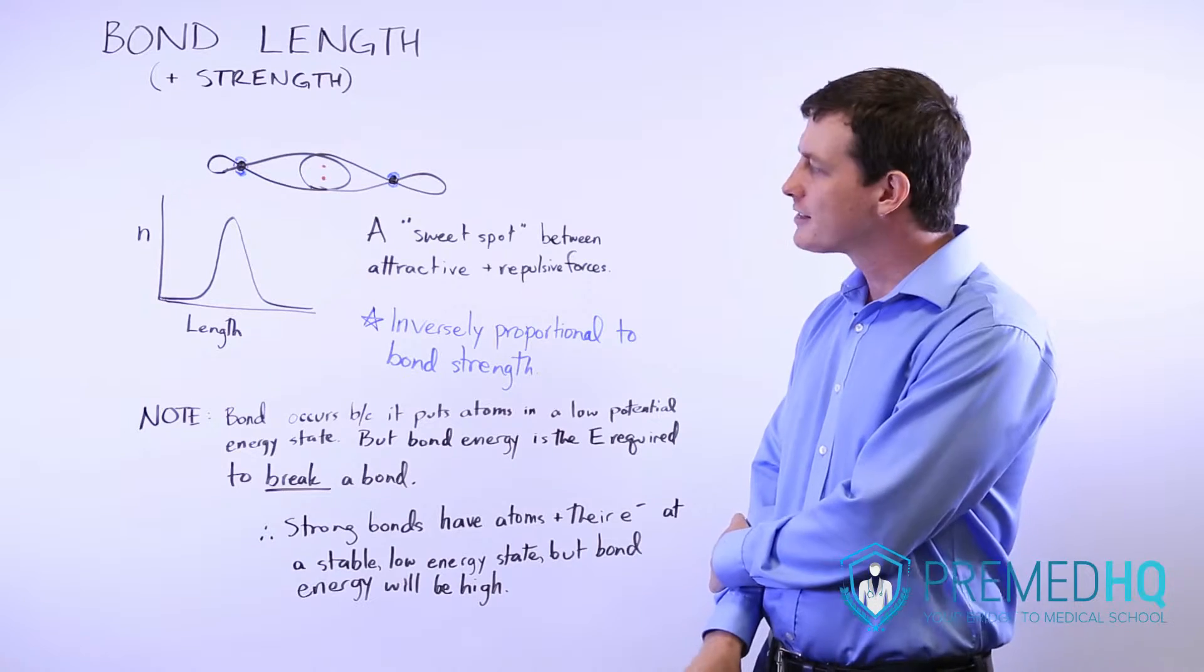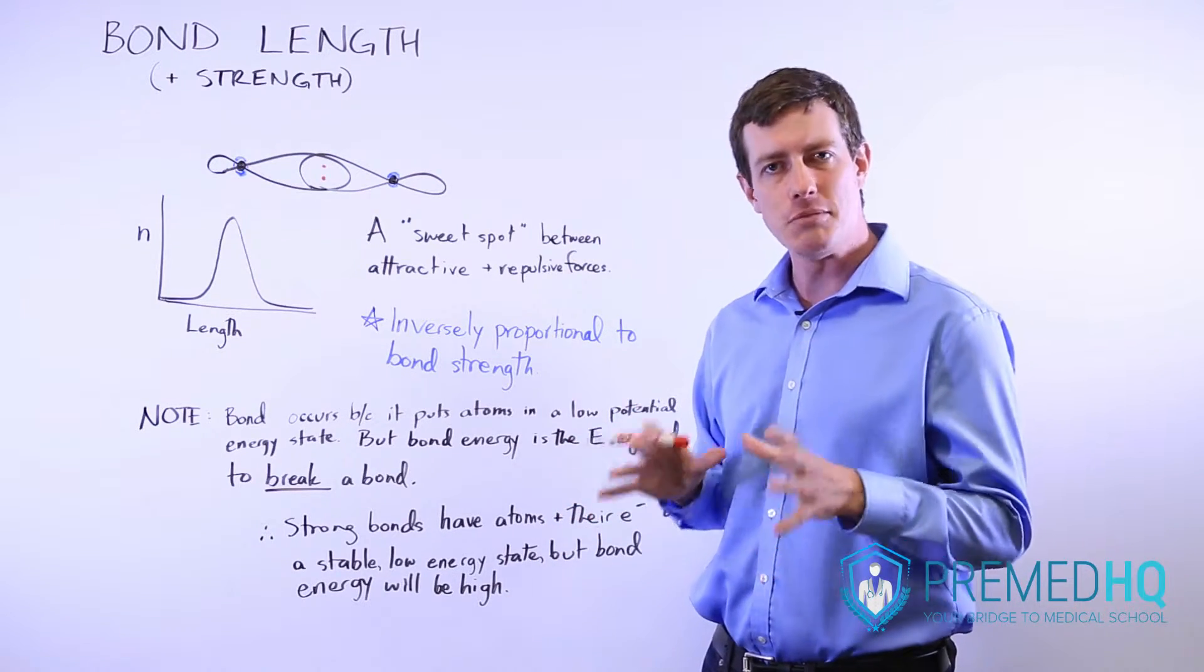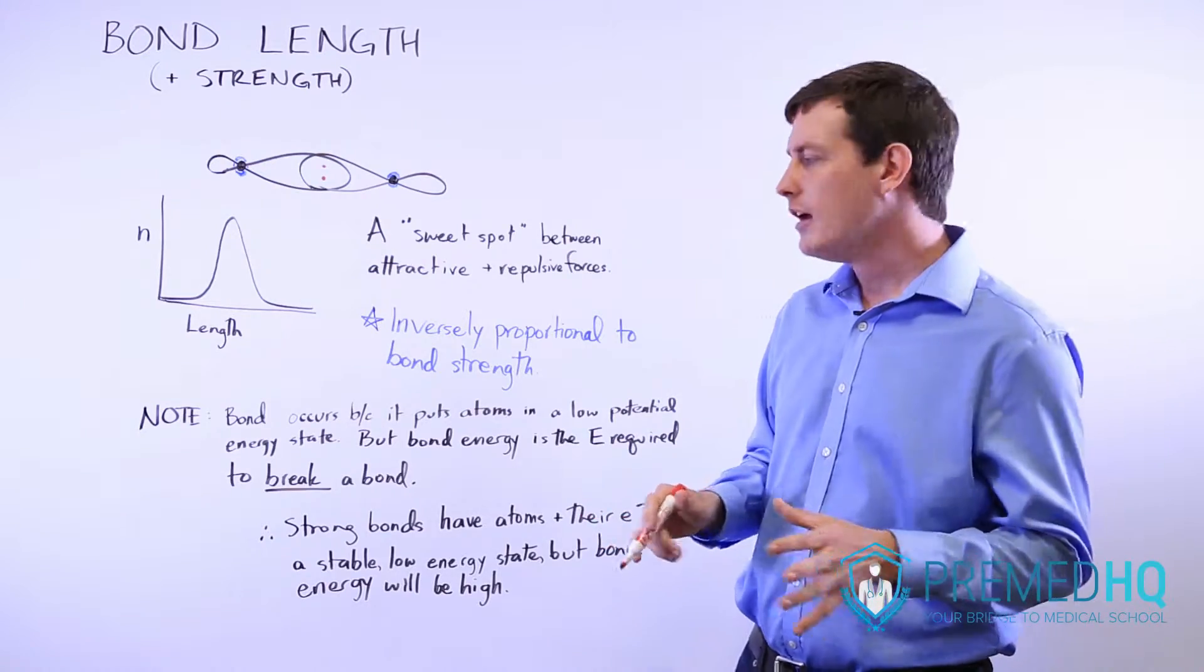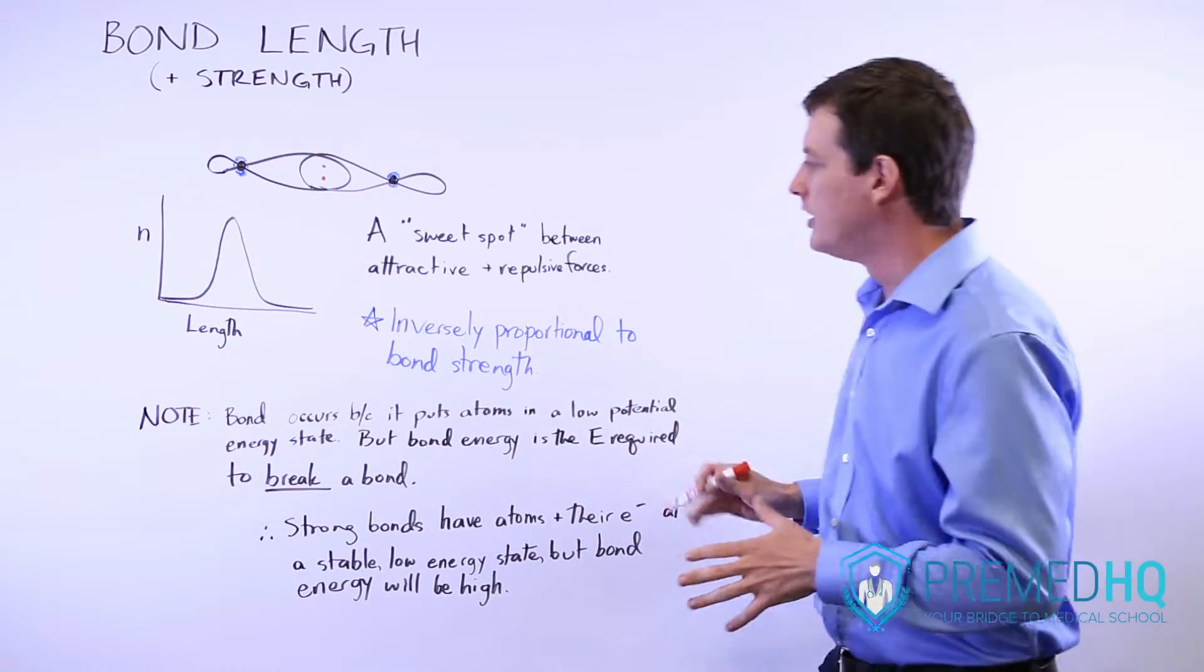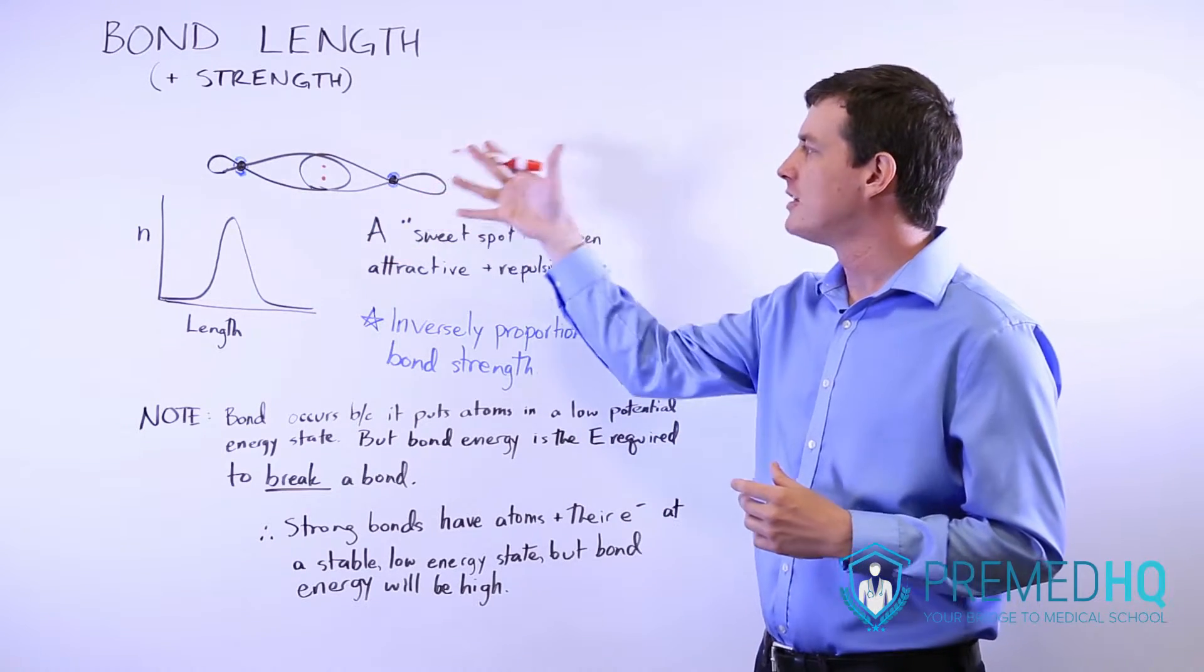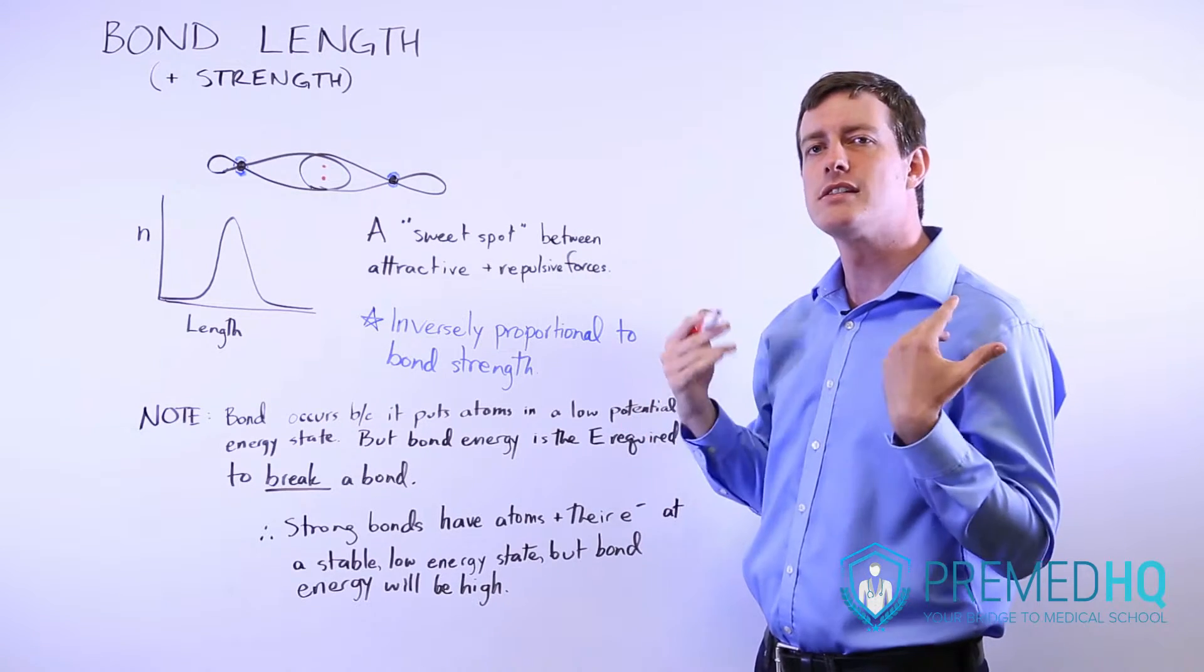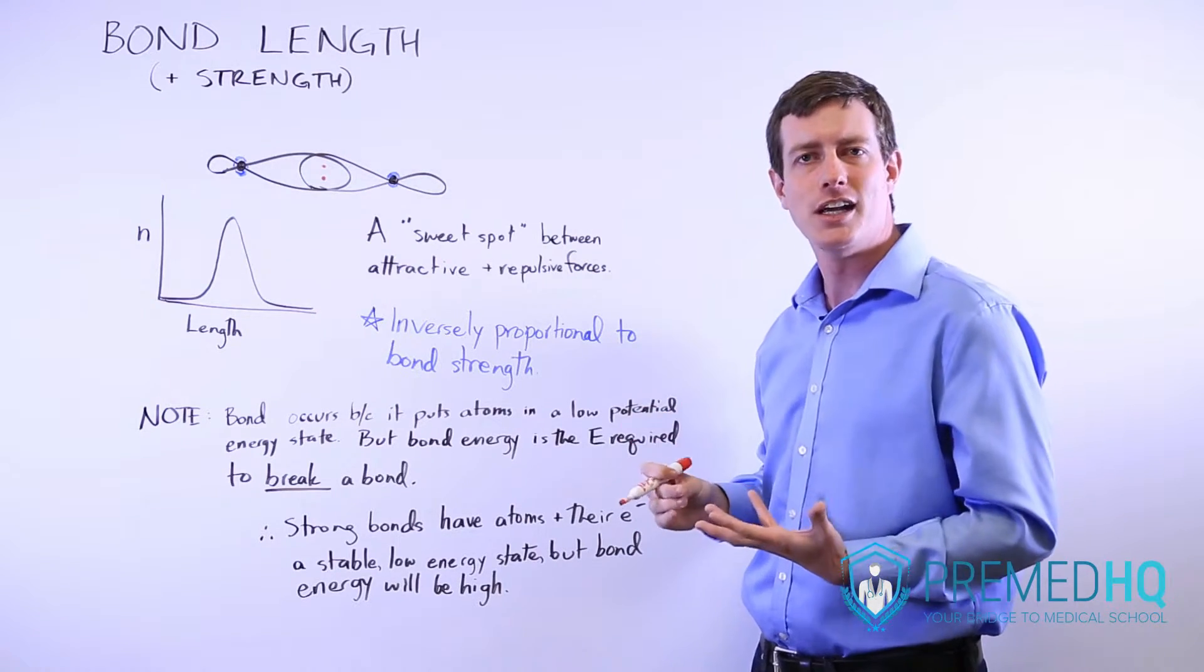The second thing to realize is about this term known as bond energy, because it can be somewhat confusing. Realize that a bond occurs because it's energetically favorable for the electrons and the nuclei to settle into this arrangement, which puts them in a state of low potential energy.